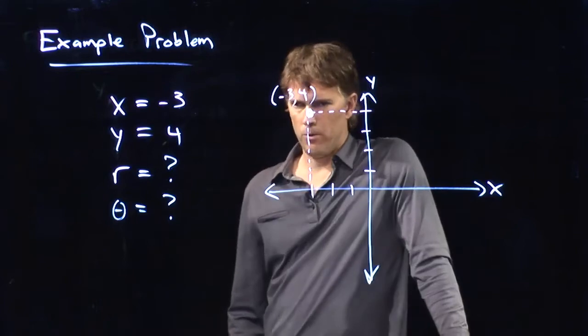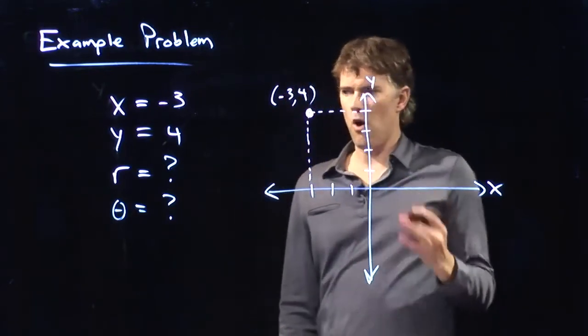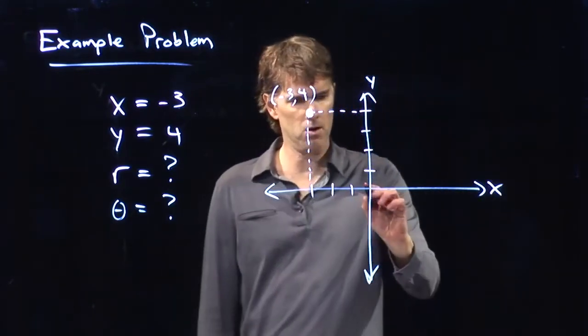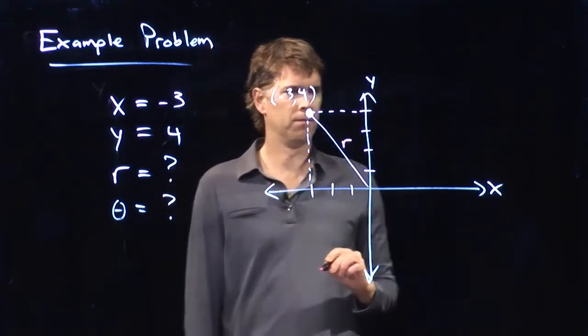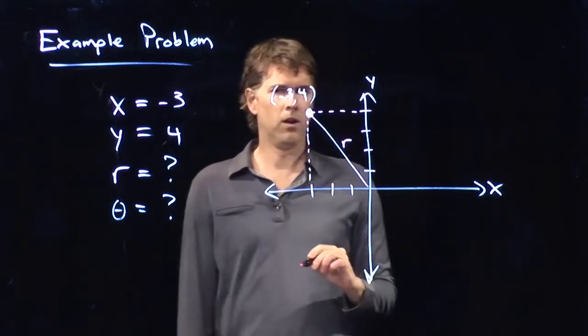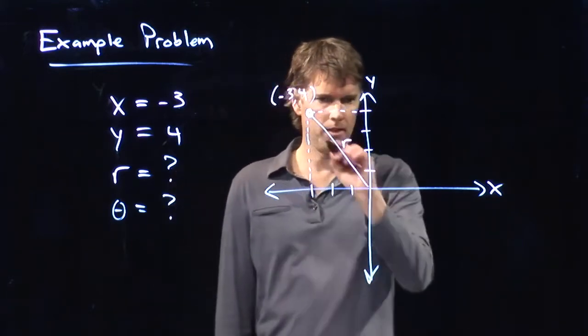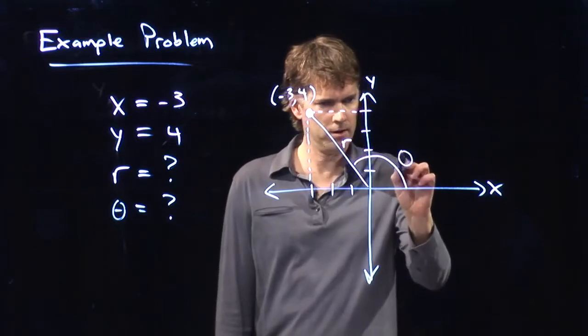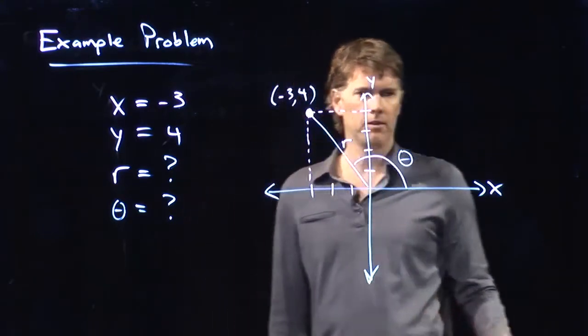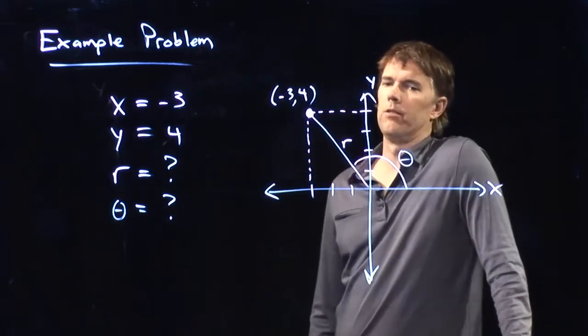All right, and now we're faced with the question: what is r, and what is theta? Well, r is how far are you from the origin. So that is r. What is theta? Theta is how far are you around from the x-axis. So theta, in our case, looks like that.